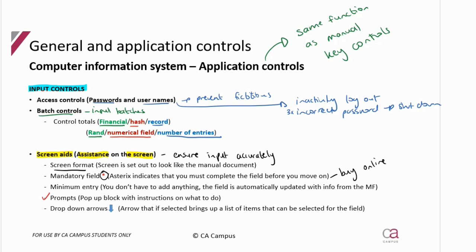Next is minimum entry. You don't have to add everything manually because as soon as you put one thing in one field, it automatically updates the other fields with information from the master file. So as soon as I put a stock number in, the stock description comes up. As soon as I put a customer name in, the customer number and all the customer's details come up, because all of those are already in the master file.